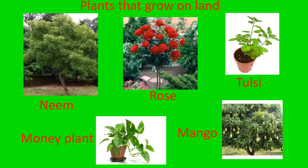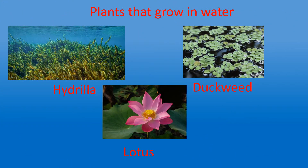Now children, turn to page 87. Plants on land. We find many plants on land. They grow on land, like the money plant, rose plant, tulsi plant, neem plant, mango plant, etc. Some plants grow in water. They are called aquatic plants. Remember, plants or animals — anything found in water is called aquatic. The aquatic plants are lotus, hydrilla, and duckweed.